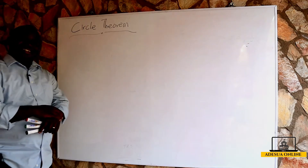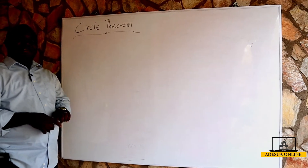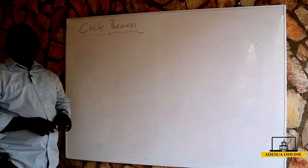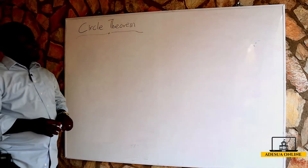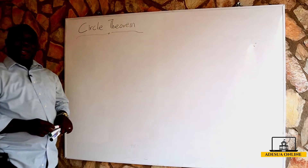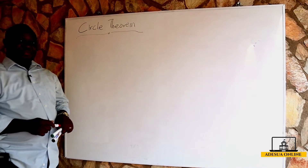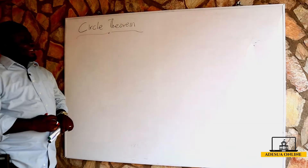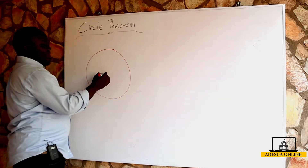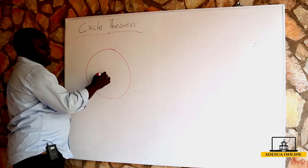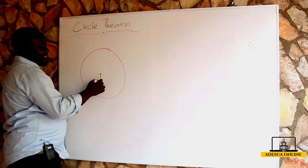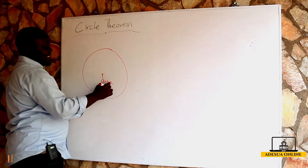Hello students, our next topic for today is circle theory, which is plane geometry 2. Today we are going to learn the parts of a circle. Now, what do we consider a circle? One thing about a circle is that it has what we call a center.